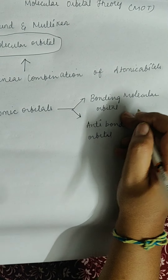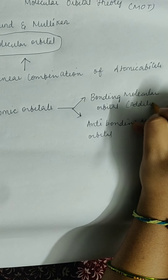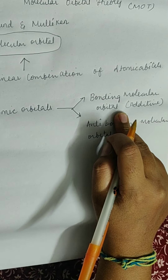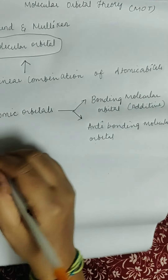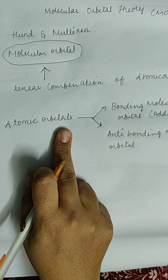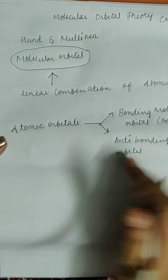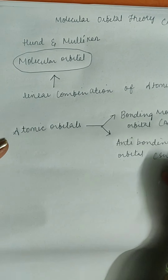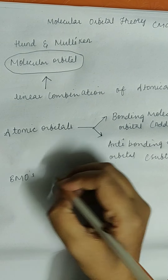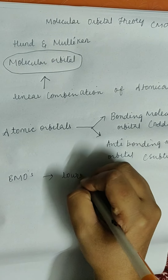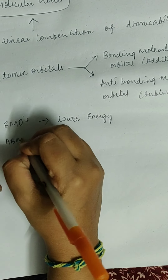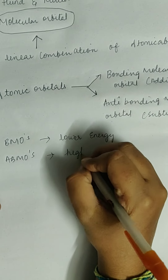Bonding molecular orbitals are formed when atomic orbitals combine by an additive combination, whereas anti-bonding molecular orbitals are formed by a subtractive combination. Bonding molecular orbitals (BMOs) have lower energy, while anti-bonding molecular orbitals have higher energy.